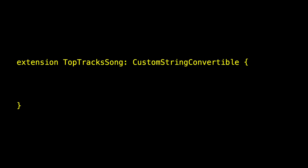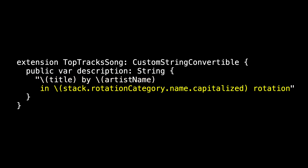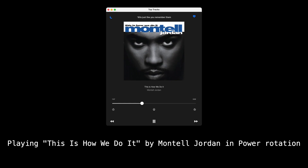Let's conform TopTrackSong to CustomStringConvertible. We implement the computed property description and output the title by the artist name. In my app — it's like a top 40 app — each song is inside a category, so I'd like to display the rotation category information as well. And just because I'm fussy, I want to put the title inside quotes, so let's escape quotation marks on either side of the title. This is the output I see in the console now, and it's exactly what I want to see.